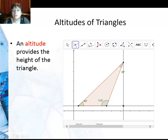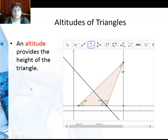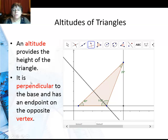I can also do altitudes with other points on the triangle. So even though this doesn't feel like the height, I'm going to be perpendicular to this line, clicking on that and going through the opposite vertex. An altitude is perpendicular to a base. The base could be any side of the triangle, and the endpoint is on the opposite vertex.